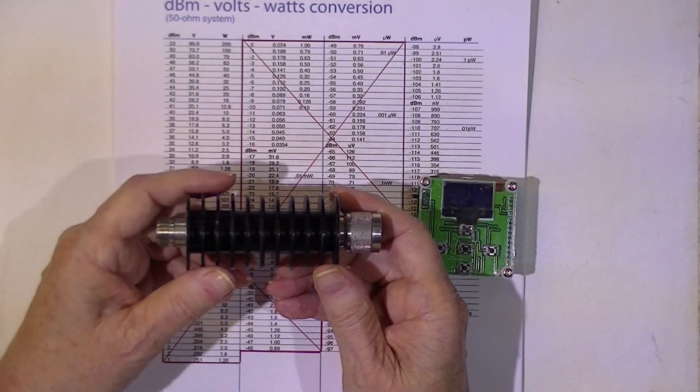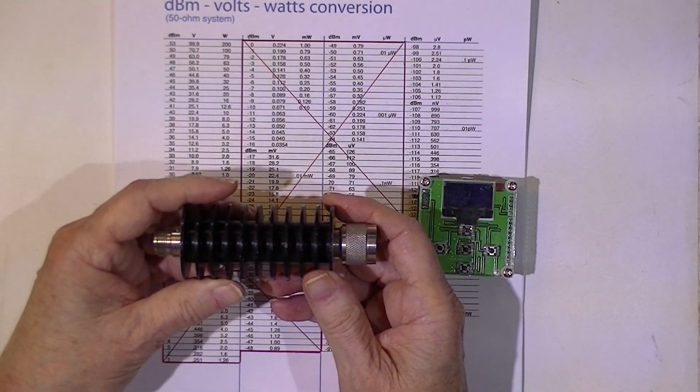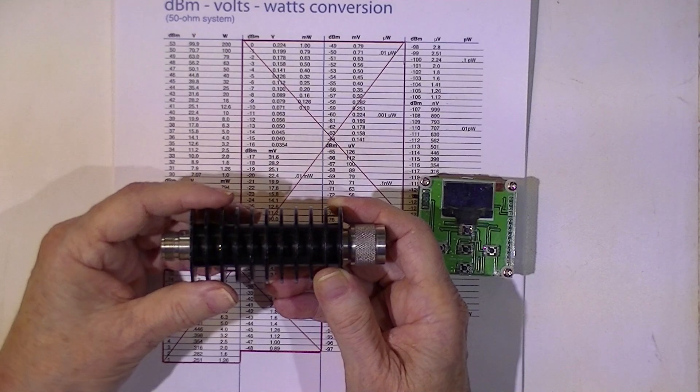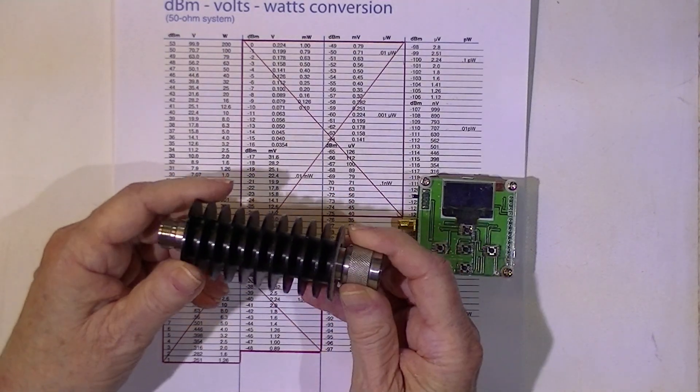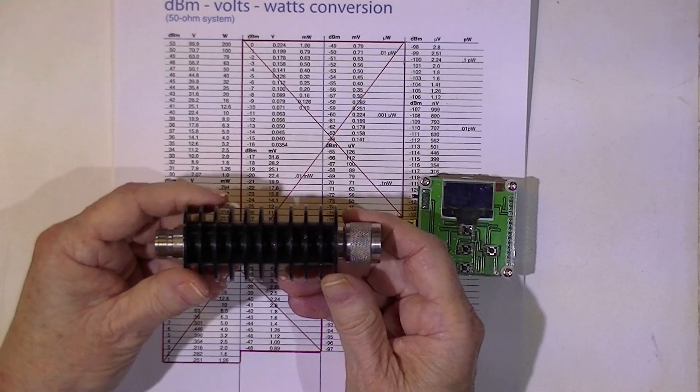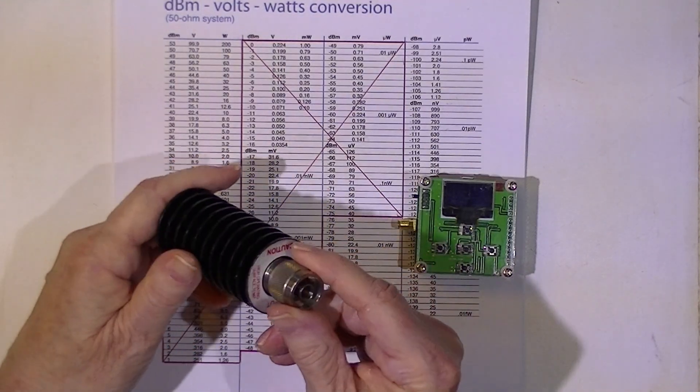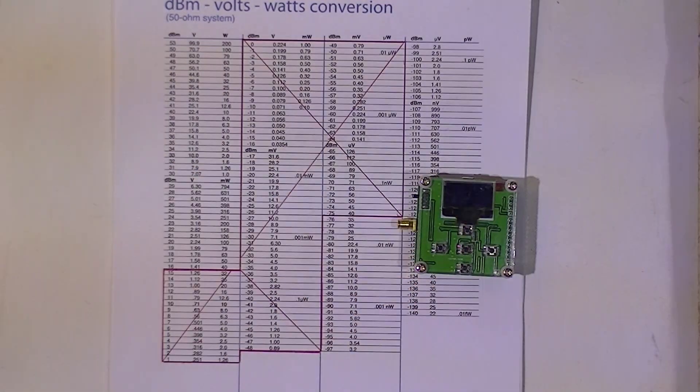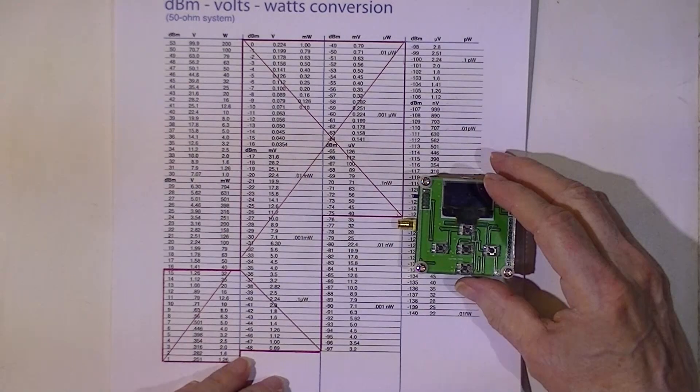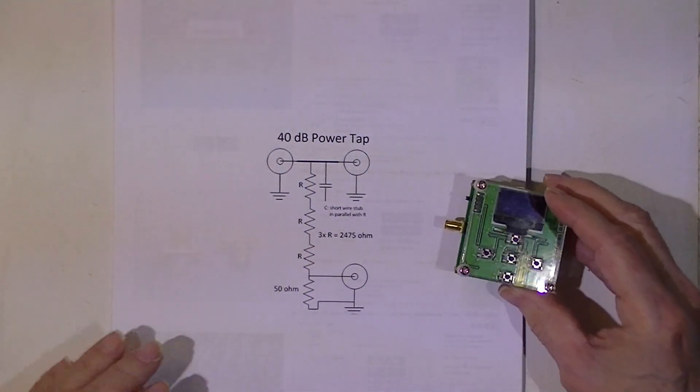But I assume we're generating this RF watts for a reason, and it probably costs some money to generate it. It's a shame to burn it up in heat, turn it into heat, so we can measure it. So what I want to do is build an RF tap.